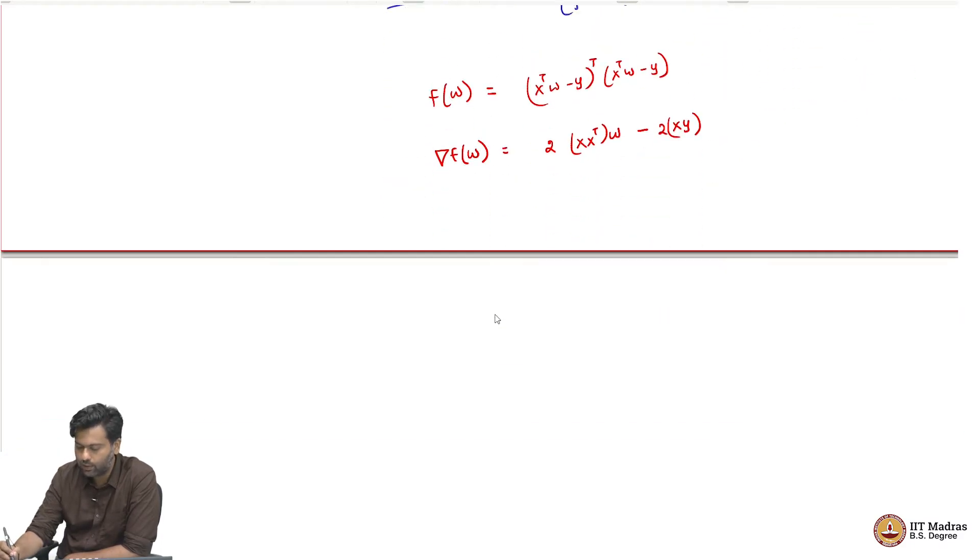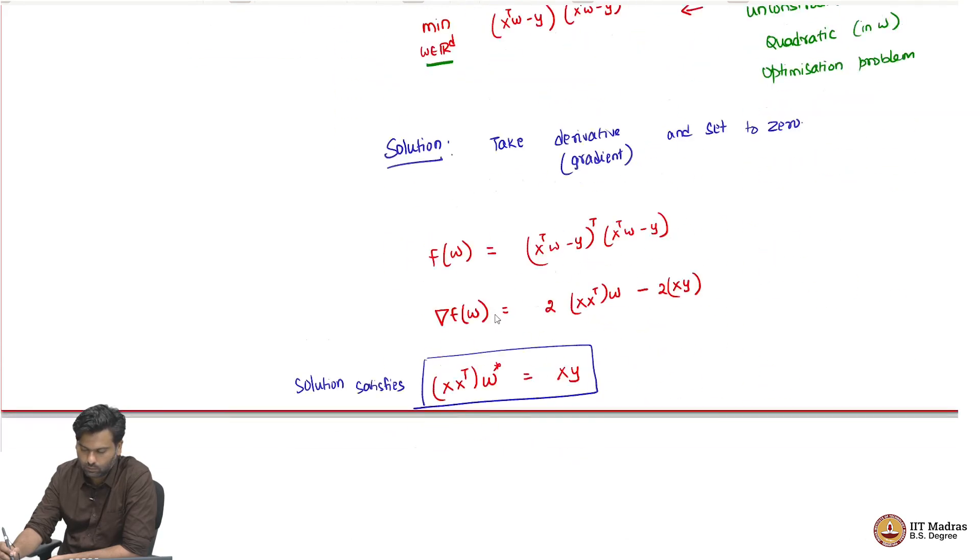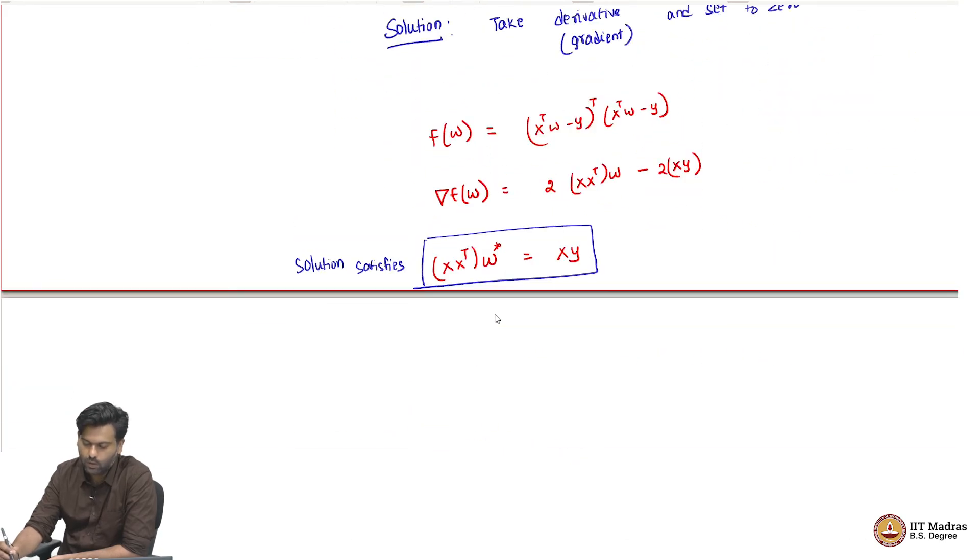This would be our gradient. We want to set the gradient to 0. If you do that, what you would get is the following equation: XX transpose W equals XY. W star, the solution satisfies this equation.